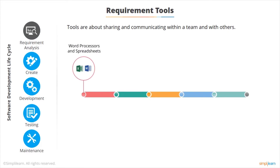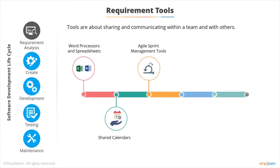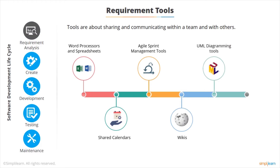Fairly obviously, word processors and spreadsheets, although spreadsheets are often very much abused and can cause a lot of problems. Shared calendars so we know when meetings are, and sprint management tools, although many of those are very low tech. Wikis are incredibly useful for storing readily accessible information. We need UML diagramming tools to describe our applications, and issue and task management tools to manage the workflow.